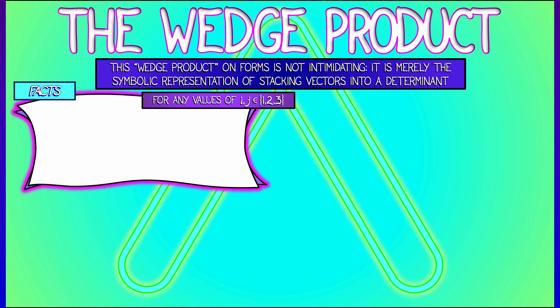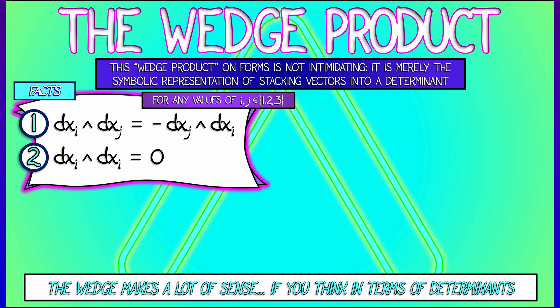Here's a few facts. Instead of working with dx and dy and dz, let me work with dxi or dxj, where i and j are in the values 1, 2, and 3. The first one is that the wedge product is anti-commutative: dxi wedge dxj is minus dxj wedge dxi. The second fact is that dxi wedge dxi is 0. Both these facts hold for all i and j in the set 1, 2, and 3.